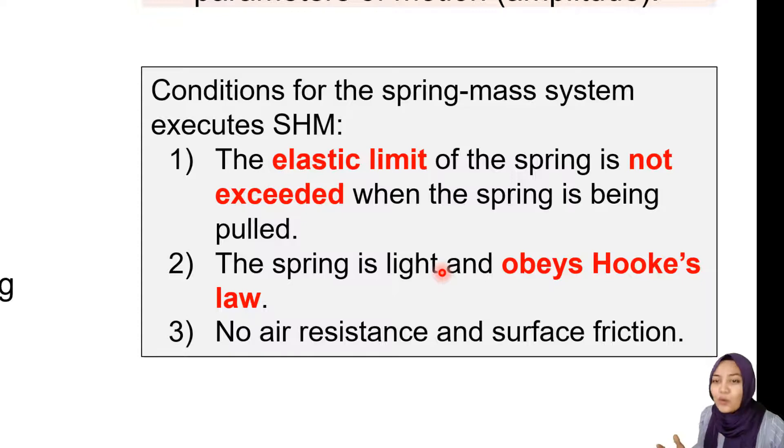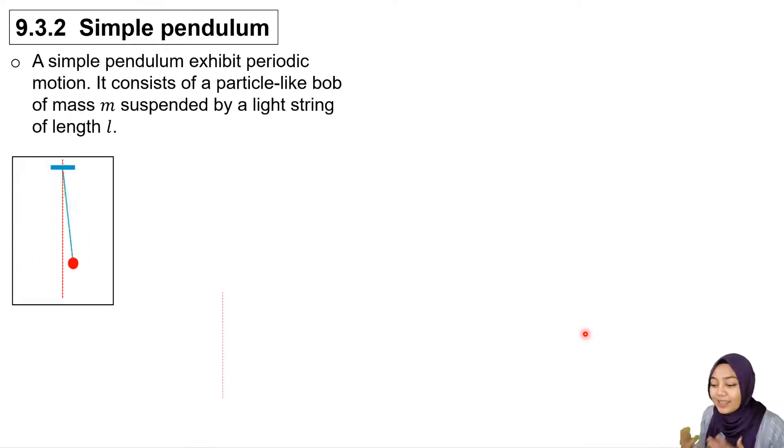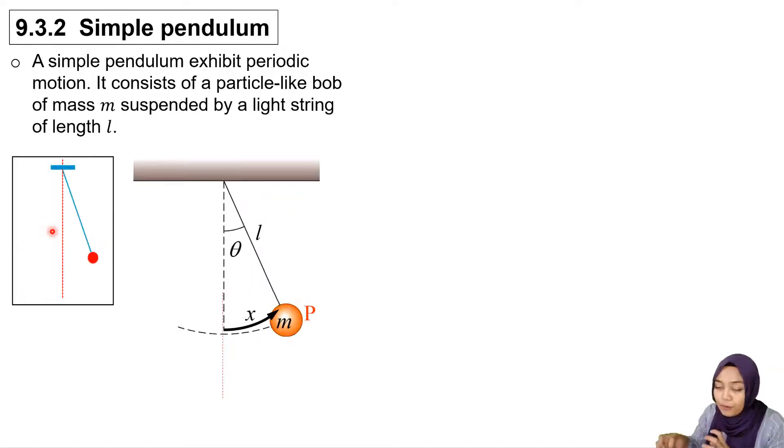The second system is simple pendulum. The simple pendulum exhibits periodic motion with a mass suspended by a light string of constant length. When we release it from a certain height and put it in a free body diagram...